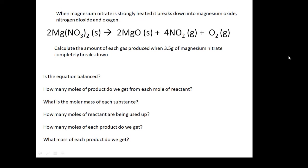Let's work our way through it. First of all, is the equation balanced? The answer is yes. How many moles of product do we get from each mole of reactant? Looking at the numbers, it's 2 goes to 2 plus 4 plus 1. So 2 moles of magnesium nitrate gives you 2 moles of magnesium oxide, 4 moles of nitrogen dioxide, and 1 mole of oxygen. We can also work out the molar mass of each substance.